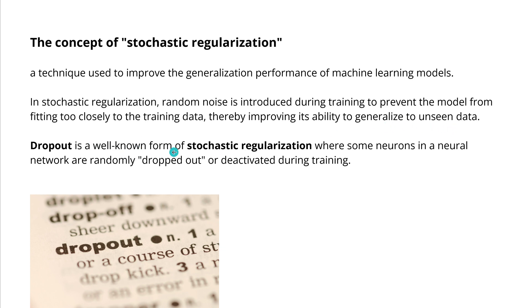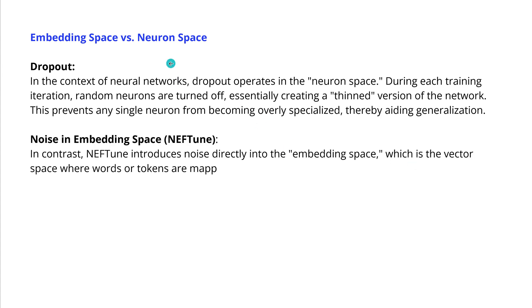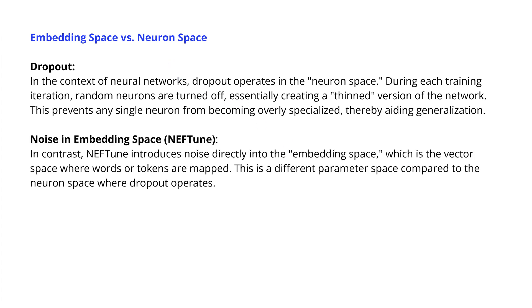Dropout is a well-known form of stochastic regularization where some neurons in our neural network are randomly dropped out — deactivated — during training. Dropout operates in the neuron space where, in each training iteration, random neurons are turned off, creating a thinned-out version of the network. This prevents any single neuron from becoming overly specialized, thereby aiding generalization.